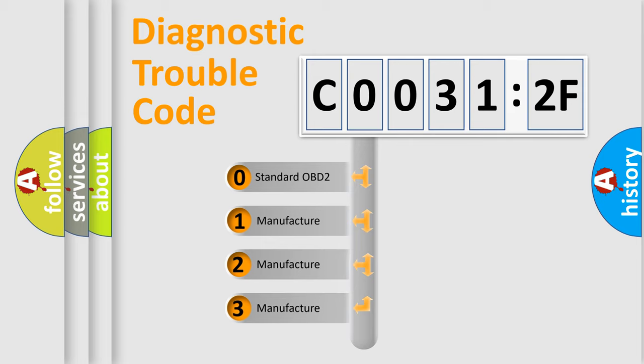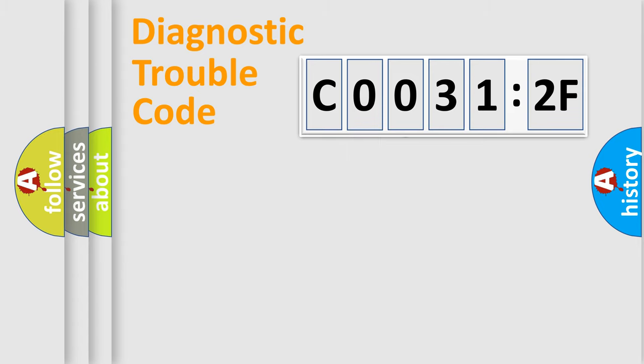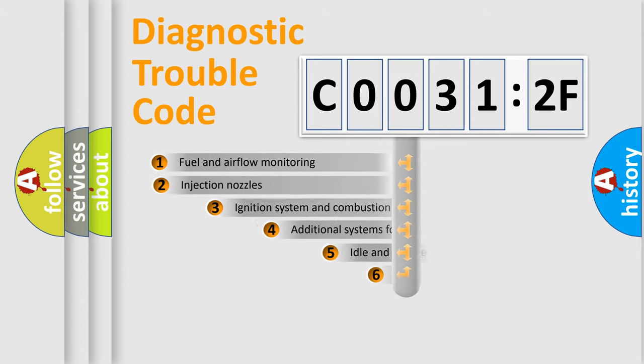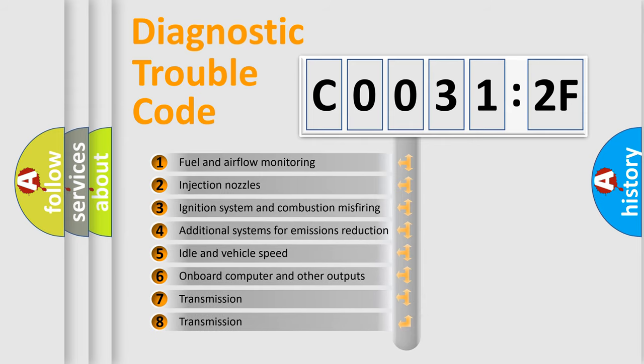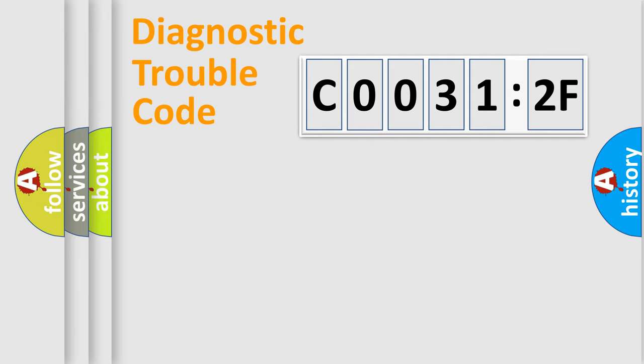If the second character is expressed as zero, it is a standardized error. In the case of numbers 1, 2, 3, it is a manufacturer-specific expression of the car-specific error. The third character specifies a subset of errors. The distribution shown is valid only for the standardized DTC code. Only the last two characters define the specific fault of the group.